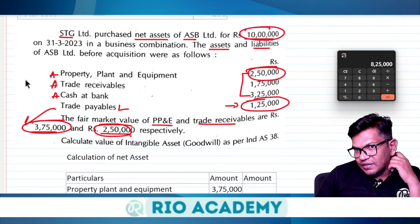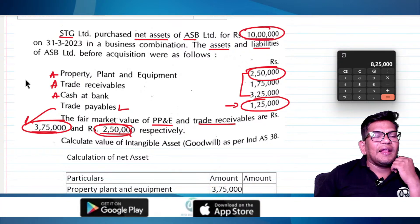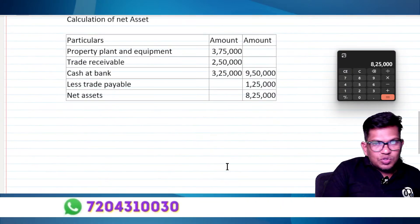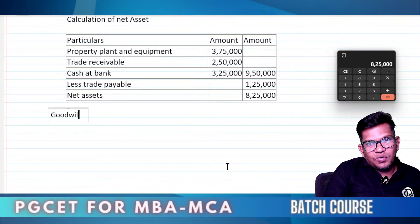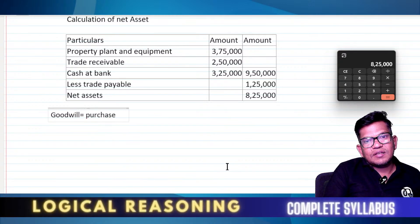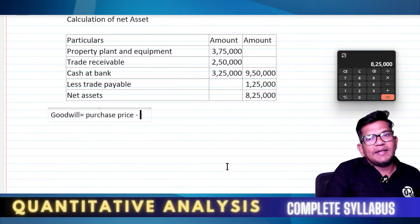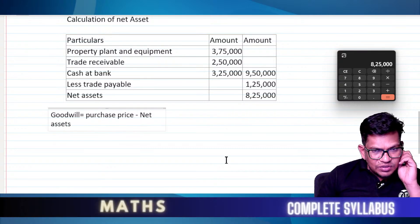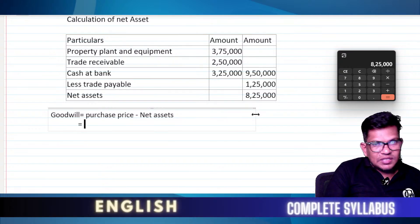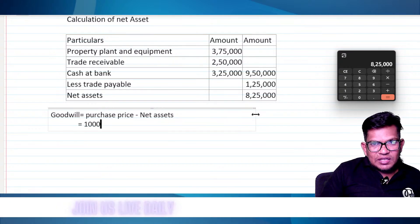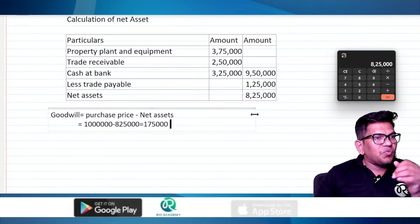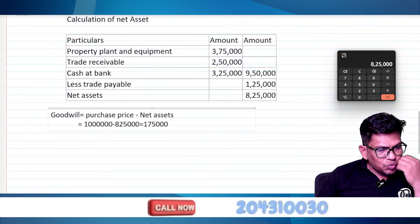Amount paid is 10 lakh rupees. Ten lakh rupees — the extra payment is goodwill. Goodwill is equal to purchase price minus net assets. So: 10 lakh minus 8 lakh 25 thousand equals 1 lakh 75 thousand. This is the goodwill. And this is the last topic.